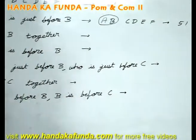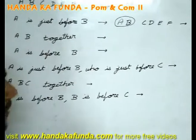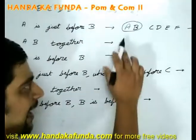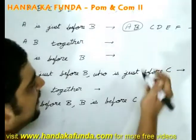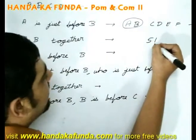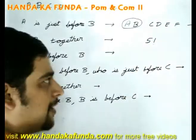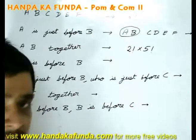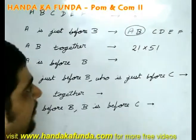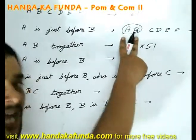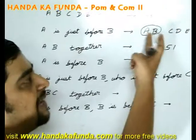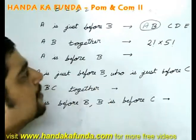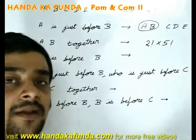How about A and B are together? Is it different from the previous case? Yes it is. You will still have these 5 entities and they can still be arranged in 5 factorial ways. But you will need to multiply it with 2 factorial, because A and B can arrange among themselves.